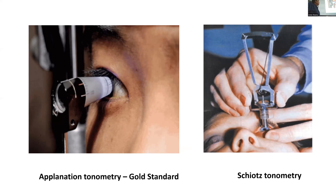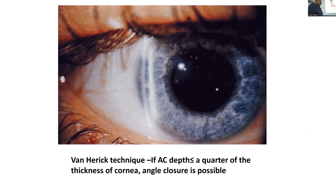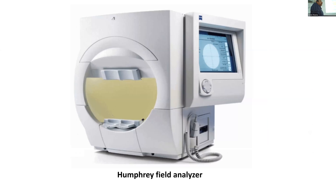This is applanation tonometry, Goldmann applanation tonometry, and this is Schiotz tonometry. Those who have gone to eye posting will see this in room number four. This is indentation tonometry, and this is applanation tonometry. Here is corneal thickness — and depending on how much is the difference between the two, you can grade whether it's a narrow angle or open angle. This is a visual field analyzer by Humphrey.